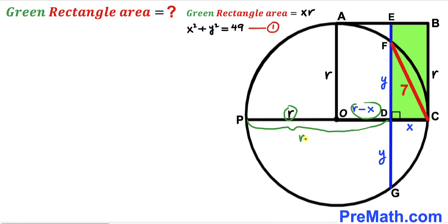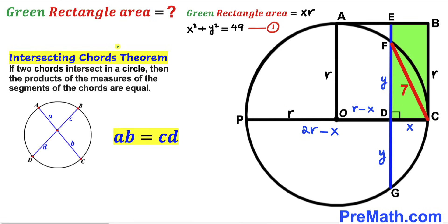Now let's recall the intersecting chords theorem: if two chords intersect inside a circle, the products of their segments are equal. As shown in the diagram, chords PC and FG intersect at point D, giving segments of length x, (2r minus x), y, and y.